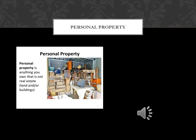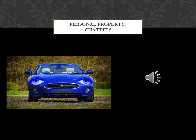Personal property is all property that isn't real property — a broad category that can be further divided into two subgroups: chattels and intangibles. The term chattels sometimes refers to all kinds of personal property, but often it refers only to tangible personal property as opposed to intangible property. A chattel, such as a furnace, can be affixed to land and become part of the real property; such chattels are called fixtures. However, fixtures may retain their quality as separate personal property for certain purposes.